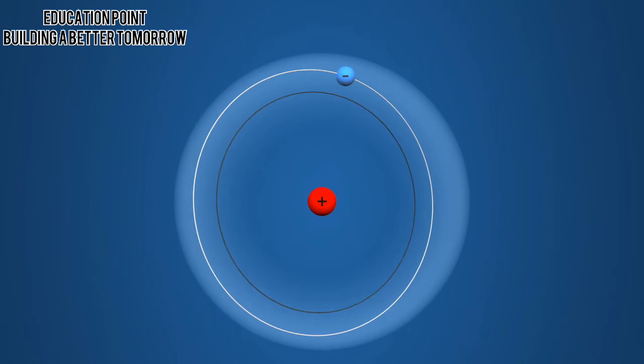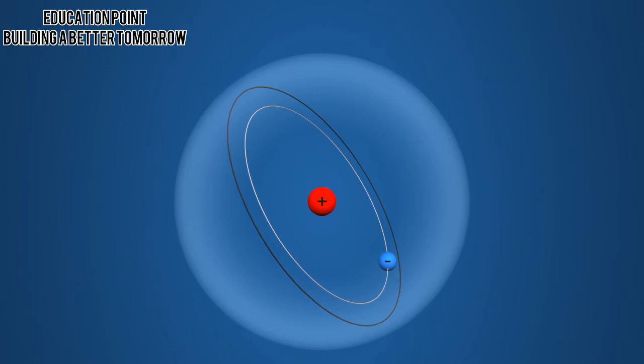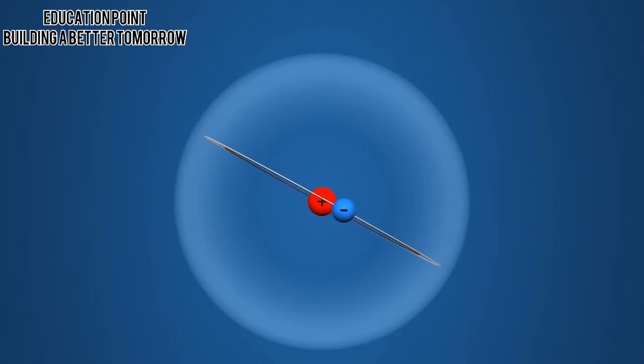The development of a new model became necessary because, according to some calculations, the electrons circulating around the nucleus in the Rutherford model should be emitting energy continuously, causing the electrons to slow down and spiral into the nucleus. However, the general experience is that atoms do not collapse. Thus, Rutherford's atomic model had to be modified.